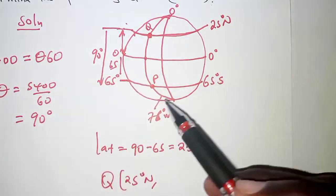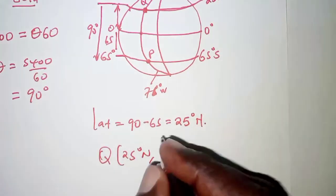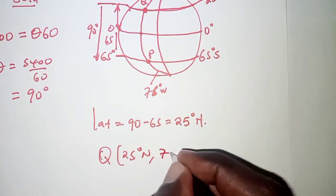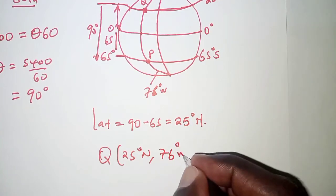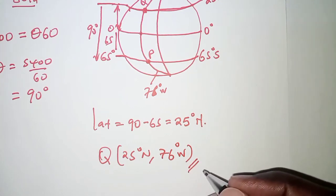Because we already have this as 25 degrees north, it's on latitude 25 degrees north and longitude 76 degrees west. And finally, we have the position of Q as required in the equation.